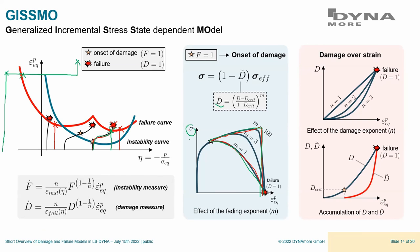Question: Do the shown models work for different element types — shells, solids, EFG? GISSMO works for shells, solids, and even beams. For EFG I'm not entirely sure and would need to check, but I believe it does since GISSMO is quite popular. The simpler criteria should also be available for most element types.